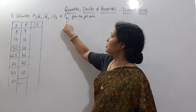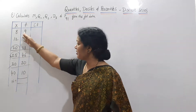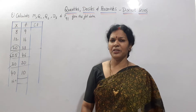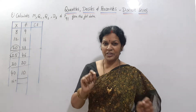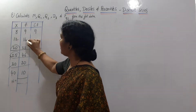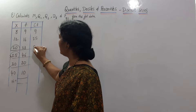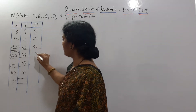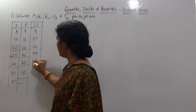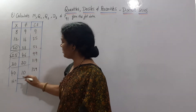Calculate M, Q1, Q3, D6, and P91 from the following data. The data is already in ascending order. Step number one is the frequency. The next step is the cumulative frequency (CF). So: 9, then 9+16=25, 25+28=53, 53+49=99, 99+20=119, 119+10=129. The total frequency N is 129.